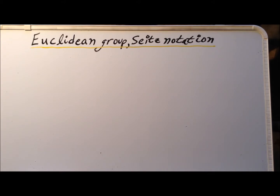Hello. In this video, we are going to discuss the Zeitz notation and the Euclidean group. Specifically, we are going to show that the Euclidean group actually is a group by verifying the four postulates that we need to demonstrate to prove that a group actually is a group.